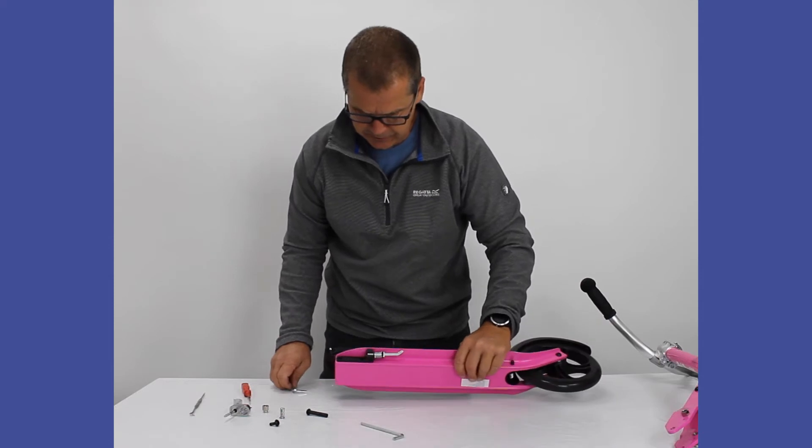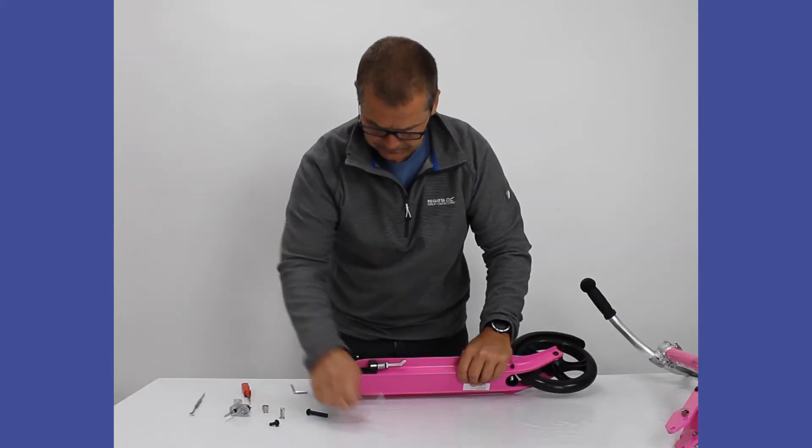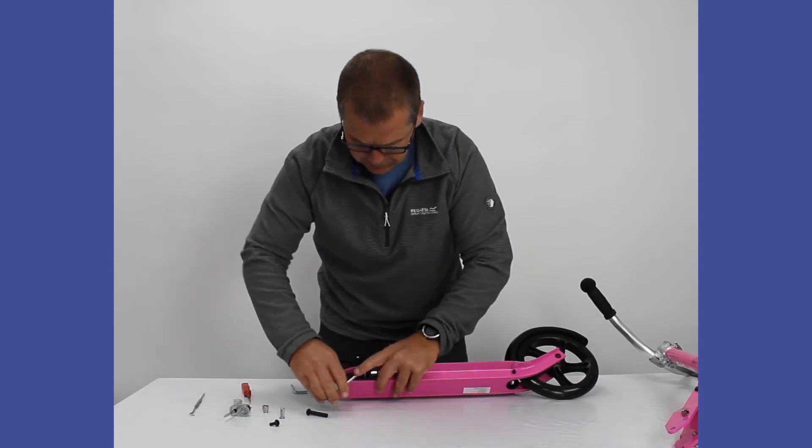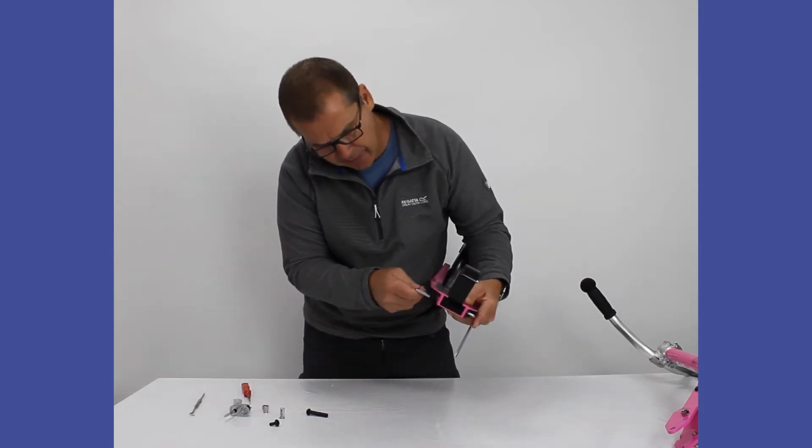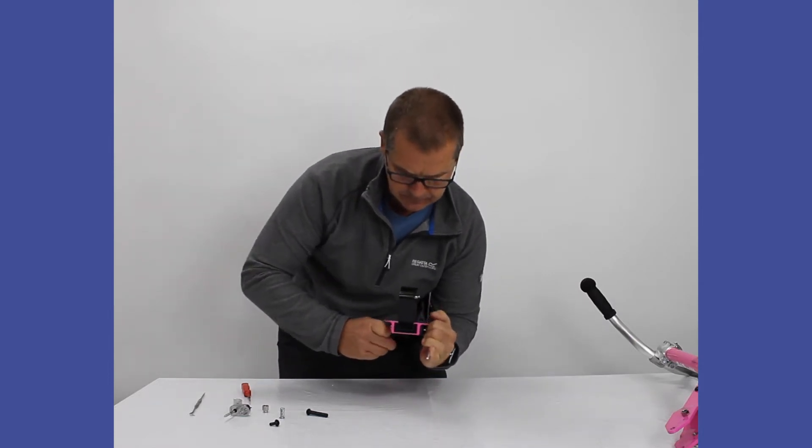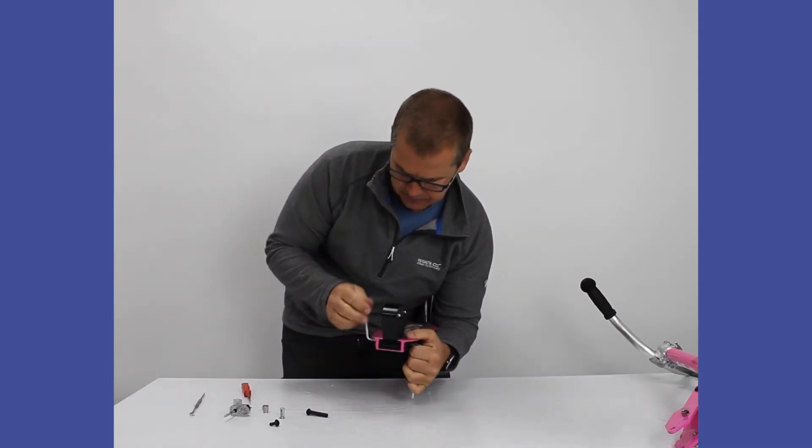Then we've got two more bolts that we need to remove. Kickstand bolts, which are this side. They bolted through onto the other side. So again, using the 5mm allen key, we're just going to undo those.